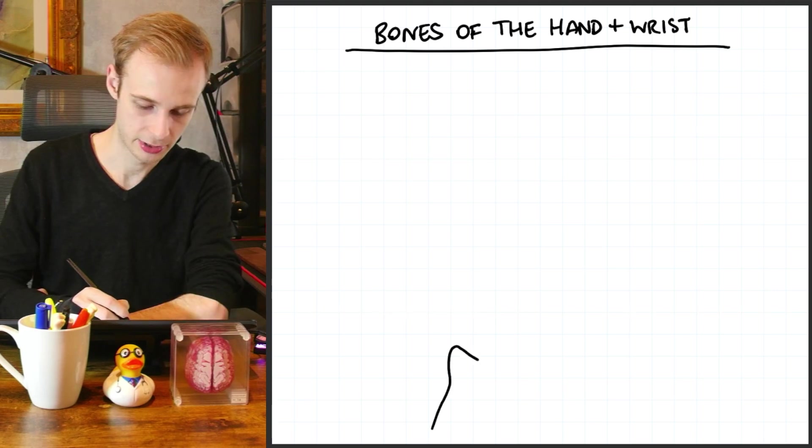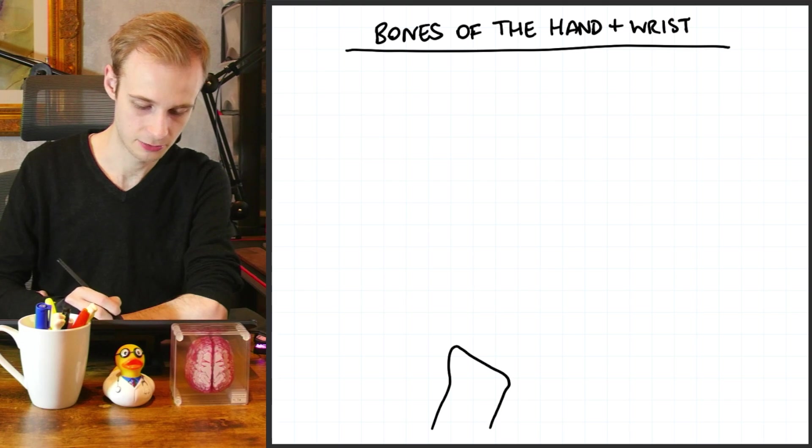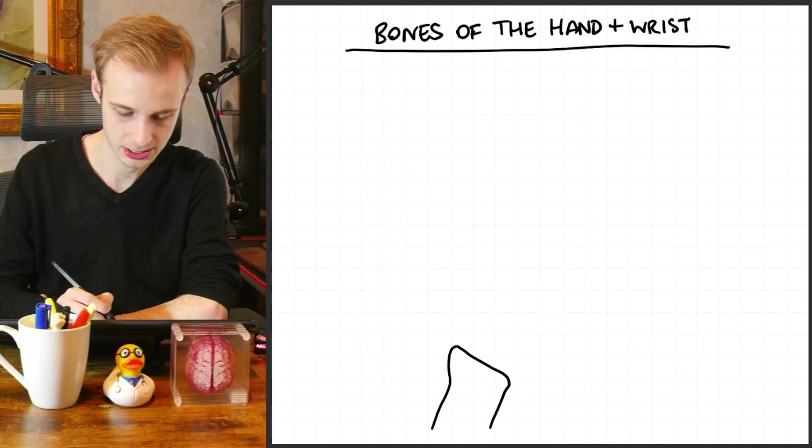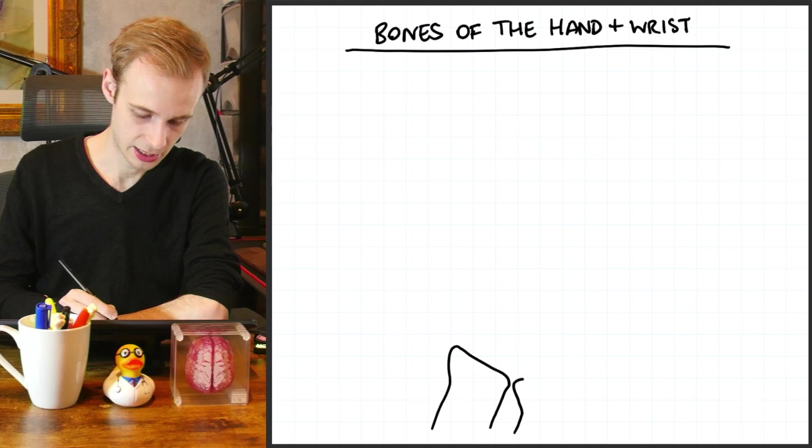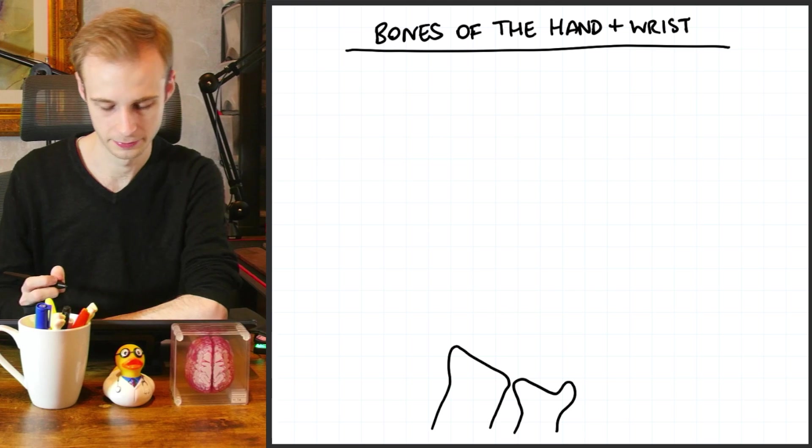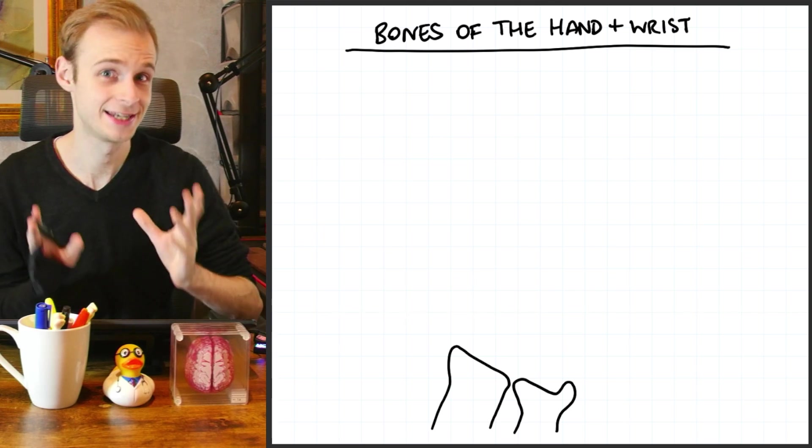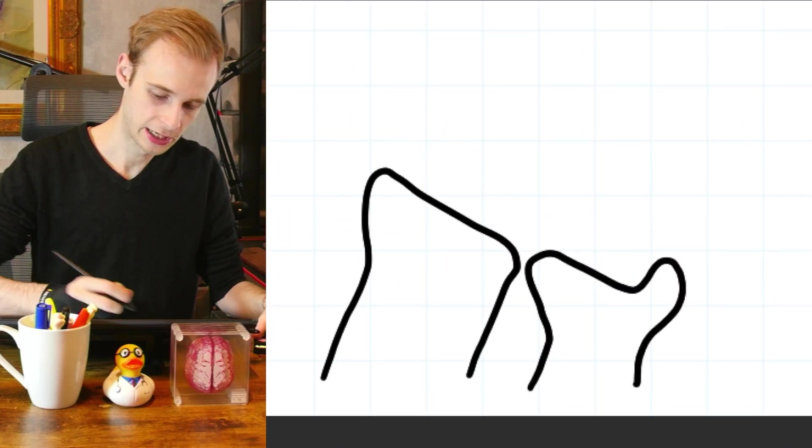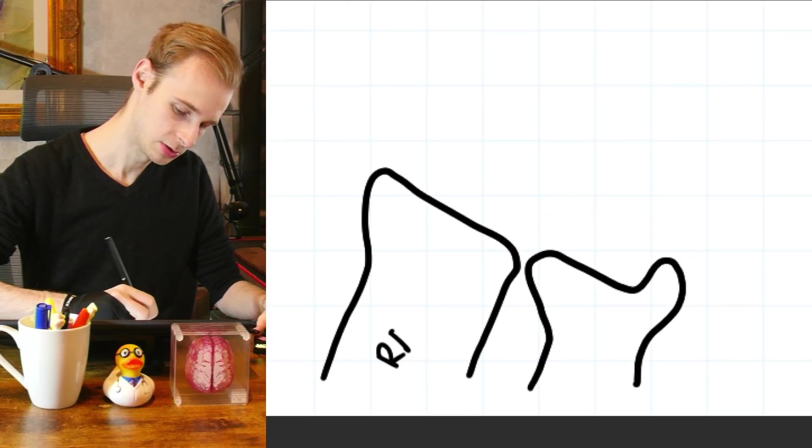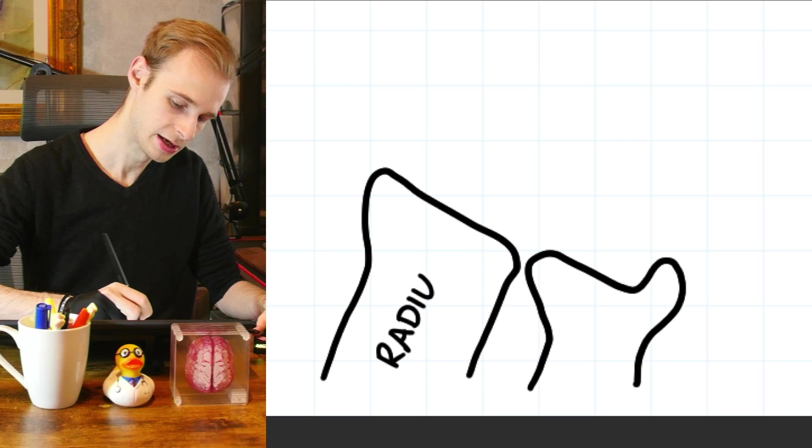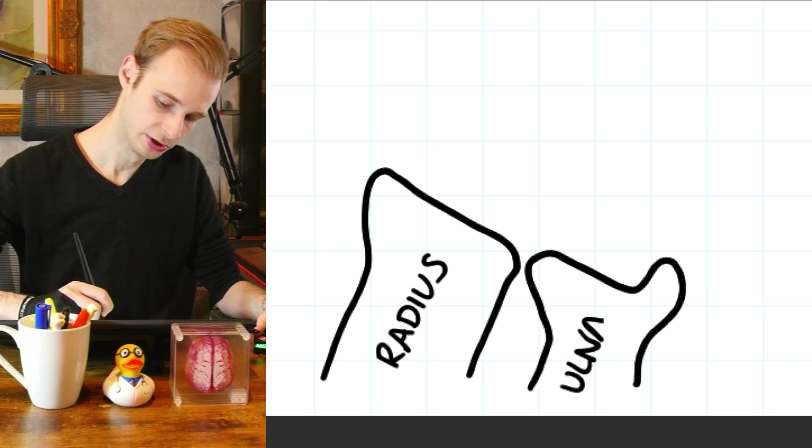So we're going to draw our radius coming in at the bottom here with its flat articulating surface and then next to it we have the ulna and its little styloid process sticking up. Now I know it looks odd doing them at the bottom of the screen like this but we're going to need the room in a minute. So we can go ahead and label these. We've got our radius and ulna.